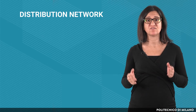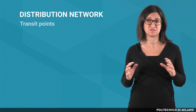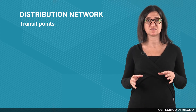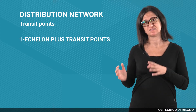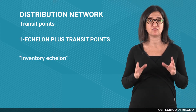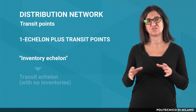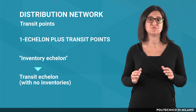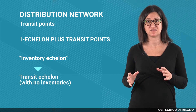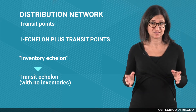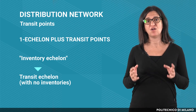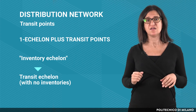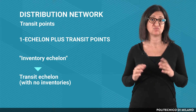In some cases, instead of regional warehouses, we can have transit points. Therefore, the distribution network is made up of one echelon plus transit points, going through one inventory echelon and one transit echelon with no inventories. Transit points aim to optimize transport to the end customers — the local distribution — by accepting a longer cycle time, which is on average one or two days higher than in a one-echelon distribution network.